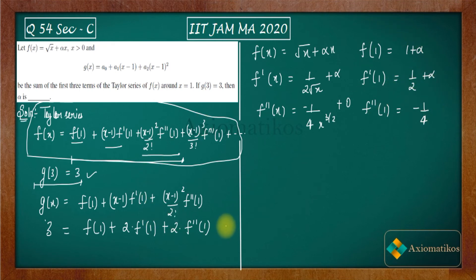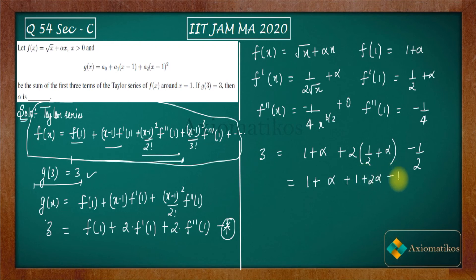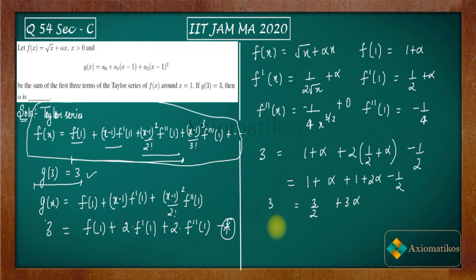Substituting these values into our equation: (1 + alpha) + 2·(1/2 + alpha) + 2·(−1/4) = 3. This simplifies to 1 + alpha + 1 + 2·alpha − 1/2 = 3, giving 3·alpha + 3/2 = 3. Therefore 3·alpha = 3/2, which gives alpha = 1/2.